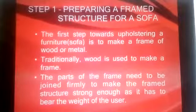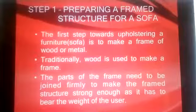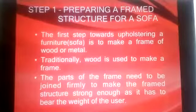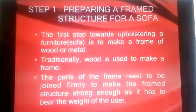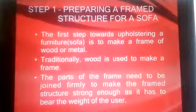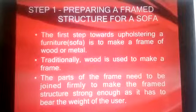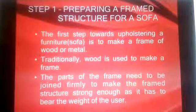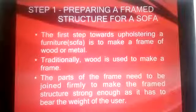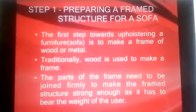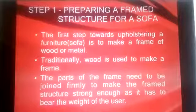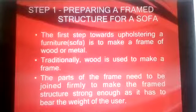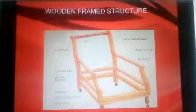In the process of upholstery, step one is preparing the frame structure. We are taking a sofa as our example. The first step towards upholstering furniture is to make a frame of wood or metal — in traditional upholstery, the frame is made of wood. The parts of the frame need to be joined firmly to make the structure strong enough to bear the weight of the user.